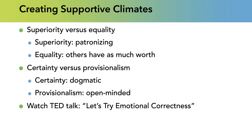With provisionalism, I could have said, 'We need to find out more information about this story' — because honestly, I wasn't sure it was true. Another way to see this: certainty says 'You're wrong, I'm certain of it,' while provisionalism might respond to new information with, 'I didn't know that — tell me more.' We can feel strongly about an issue but still be willing to listen to the other side.